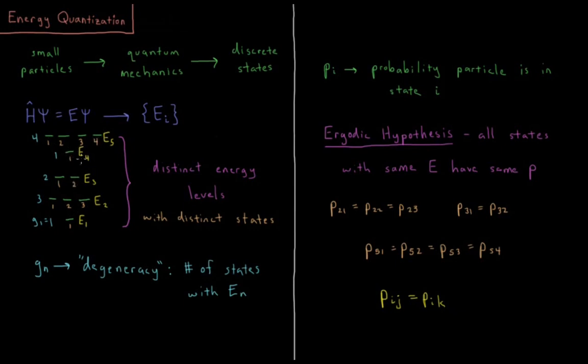And that all just depends on whatever the results of the Schrödinger equation are. So what we have is our distinct energy levels with distinct states. So the next concept we can bring up is called the degeneracy of each energy level,